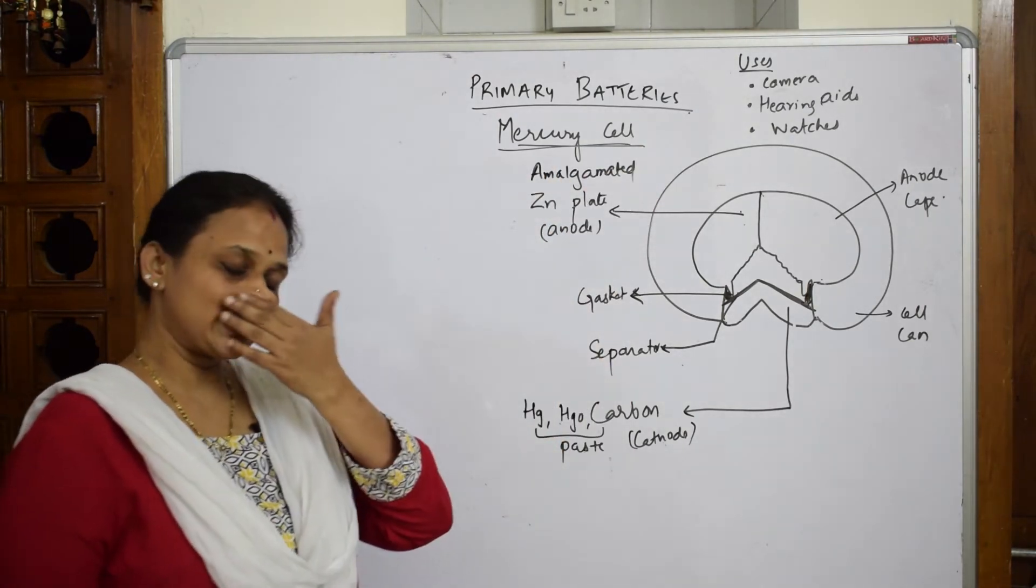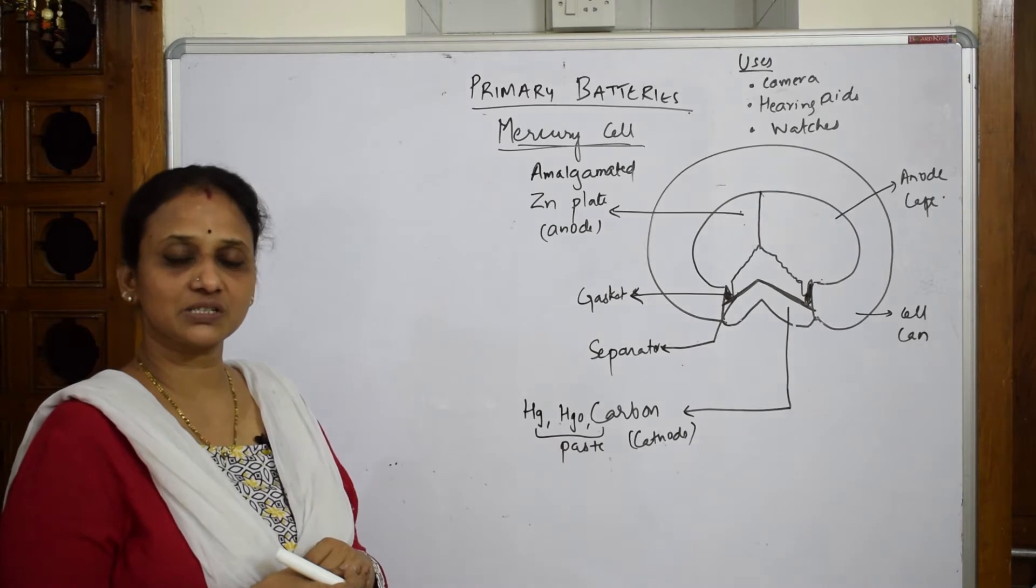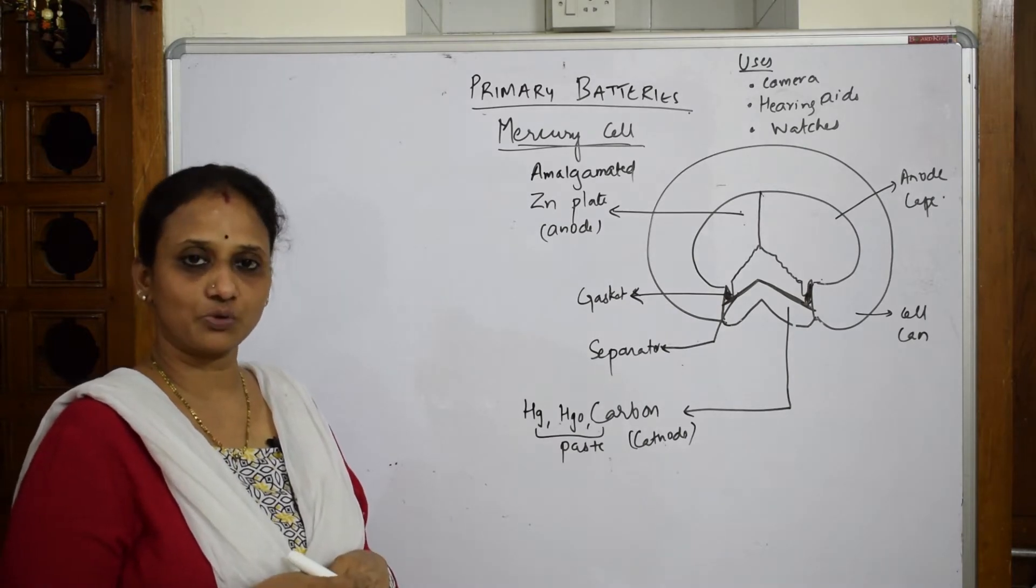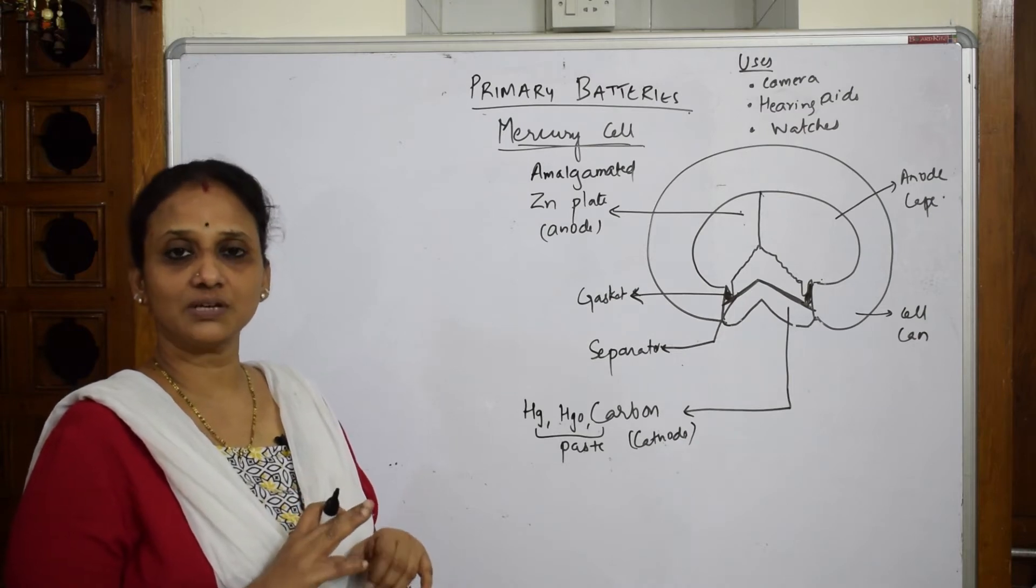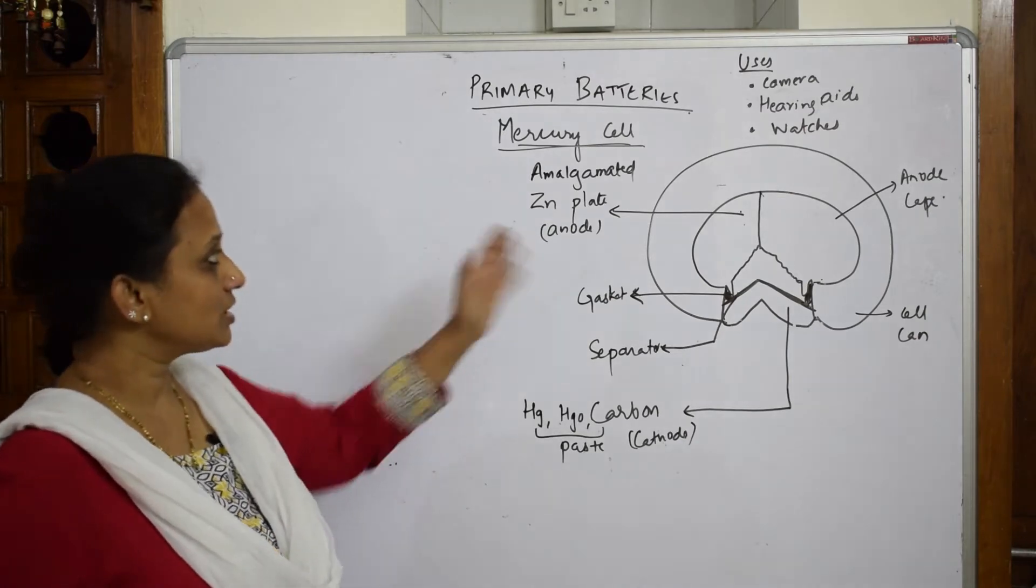In mercury cell, whenever you're writing a battery, the anodic compartment is important, cathode is important, electrolyte is important, anodic half cell is important, cathodic half cell is important, as well as overall reaction.